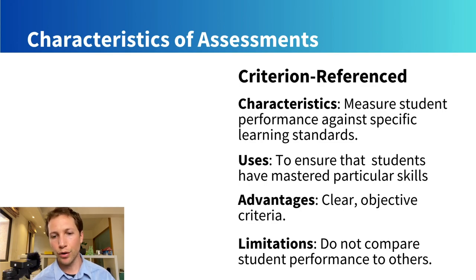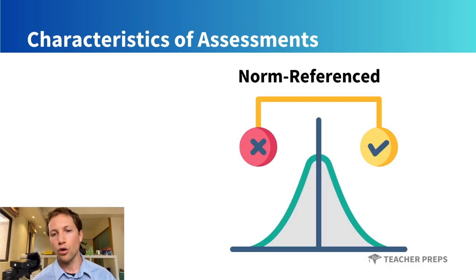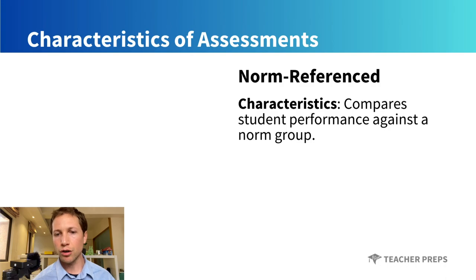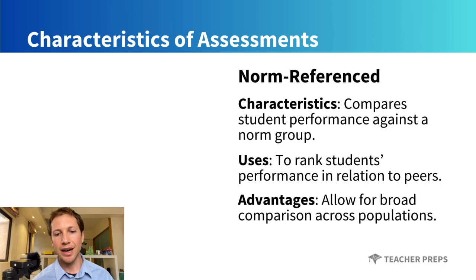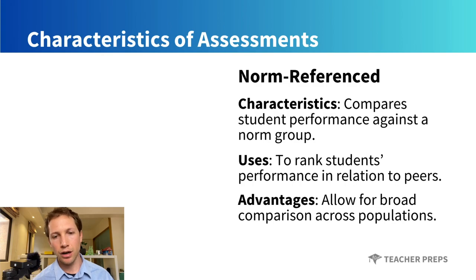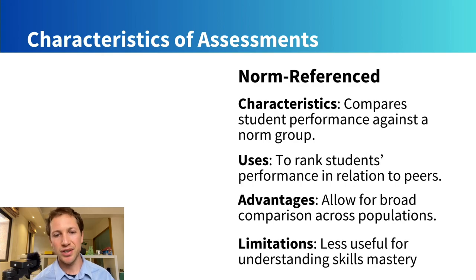The third formal type is the norm-referenced test, which compares student performance against a norm group in order to rank students' performance in relation to their peers. These tests allow for broad comparison across populations but are less useful for understanding individual mastery of content.